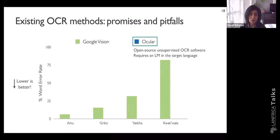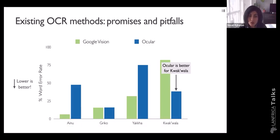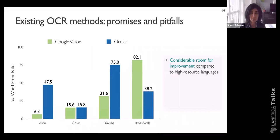Next, we look at the performance of an unsupervised OCR system called Ocular. Ocular requires a language model in the target language but doesn't need any transcribed images for training. We train Ocular's language model with the small number of transcriptions we have in the dataset. The performance is very reliant on the quality of the language model — Ainu and Yaka, which have relatively less data, are quite a bit worse than Google Vision. However, Ocular is considerably better than the off-the-shelf system for the Kwakwala dataset, because the language model is directly trained on Kwakwala text and the character vocabulary contains all the alphabets in the language's unique writing system. The OCR methods do have reasonable performance, but there is considerable room for improvement compared to higher-resource languages.